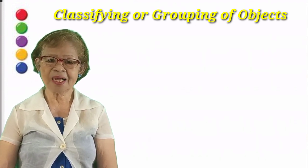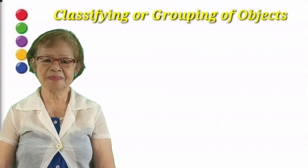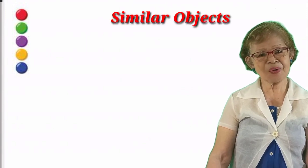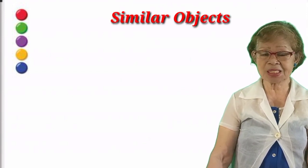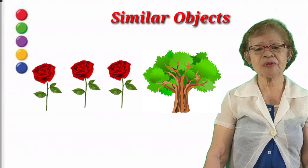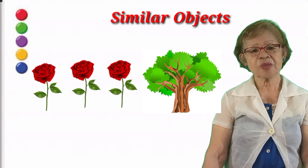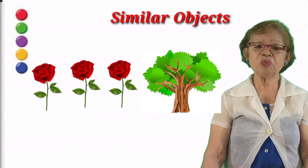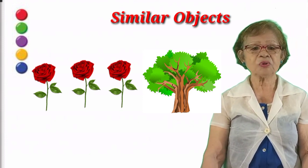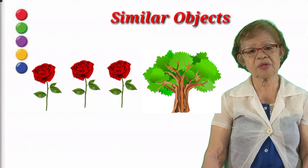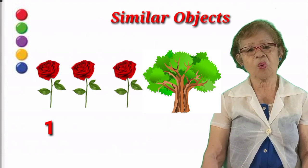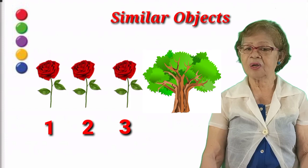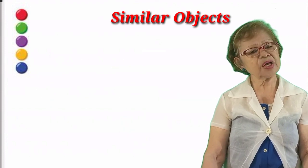Now kids, we go to our next lesson, which is similar objects. Now you will find out that there are three flowers — three red roses. One, two, three flowers are similar, or they are the same. But then we have a tree, which is not similar with the three roses. The three roses are similar objects.